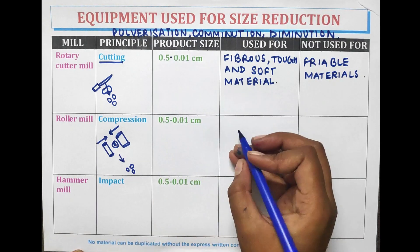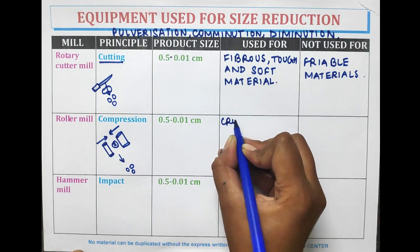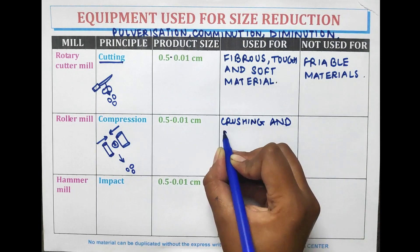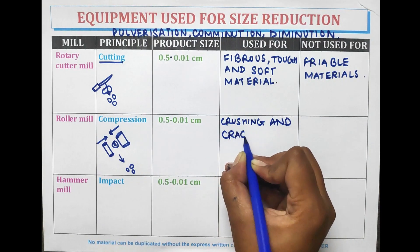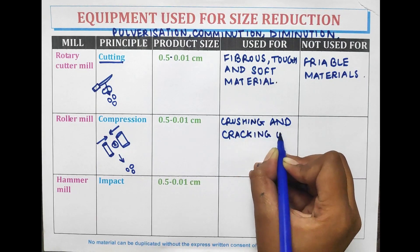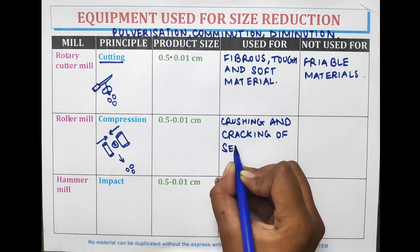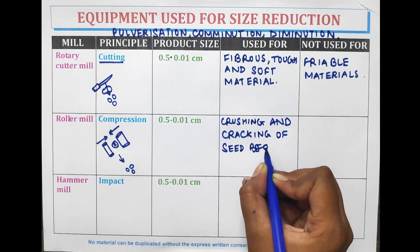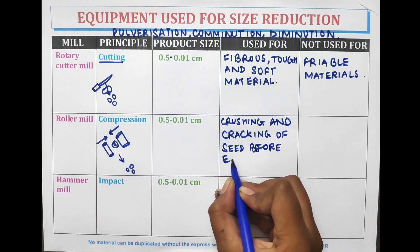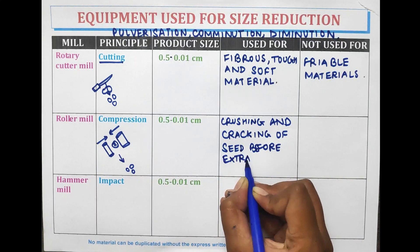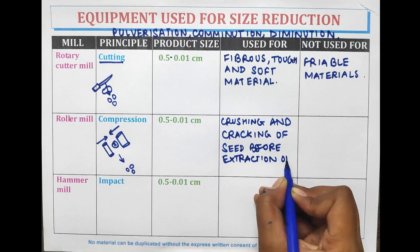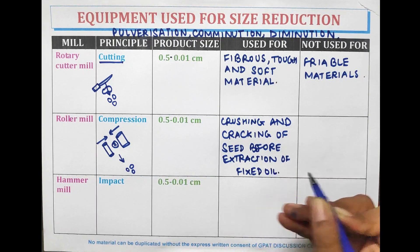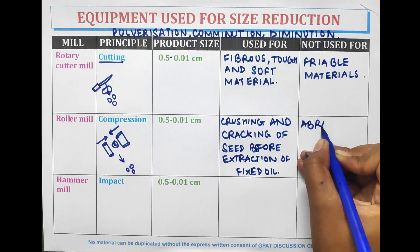The roller mill is used for crushing and cracking of seeds before extraction of fixed oil. It is not used for abrasive materials.